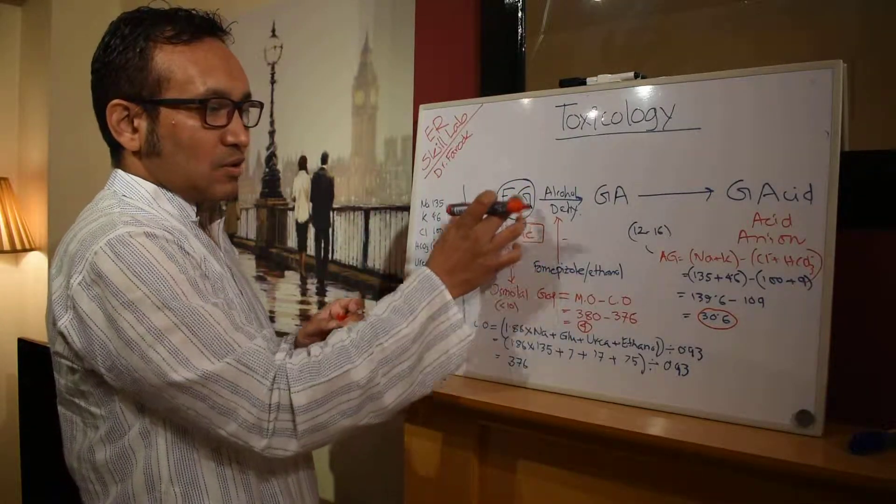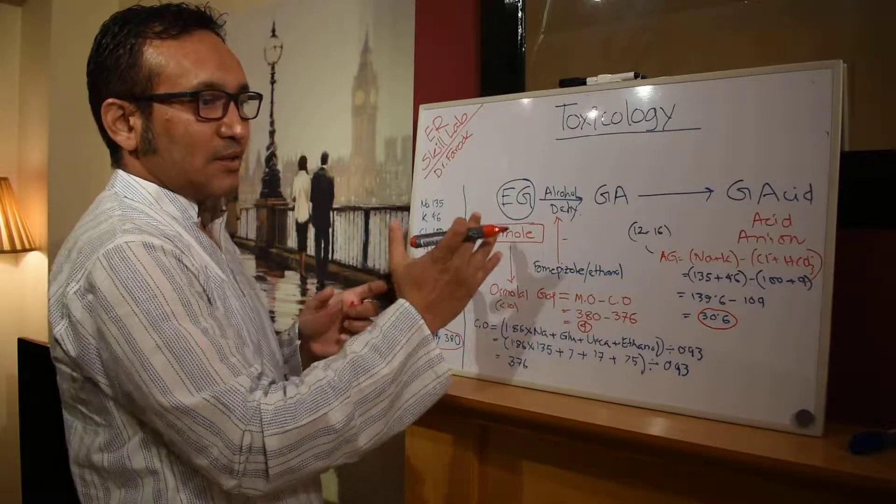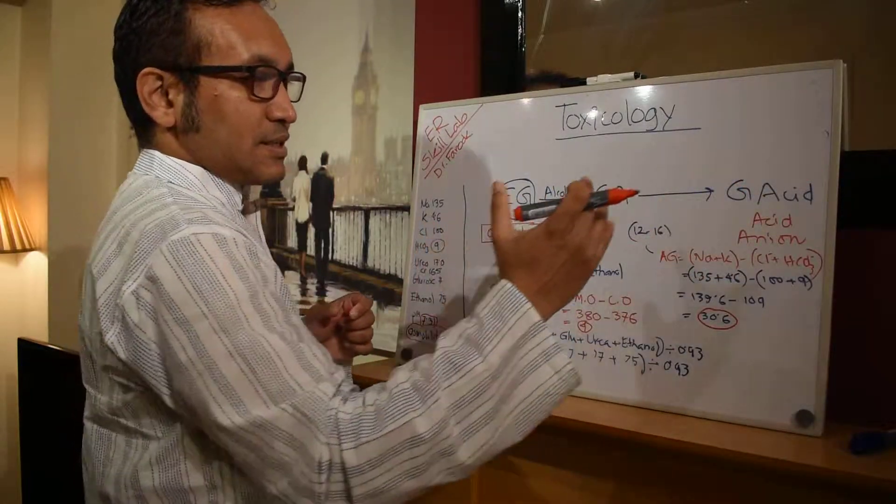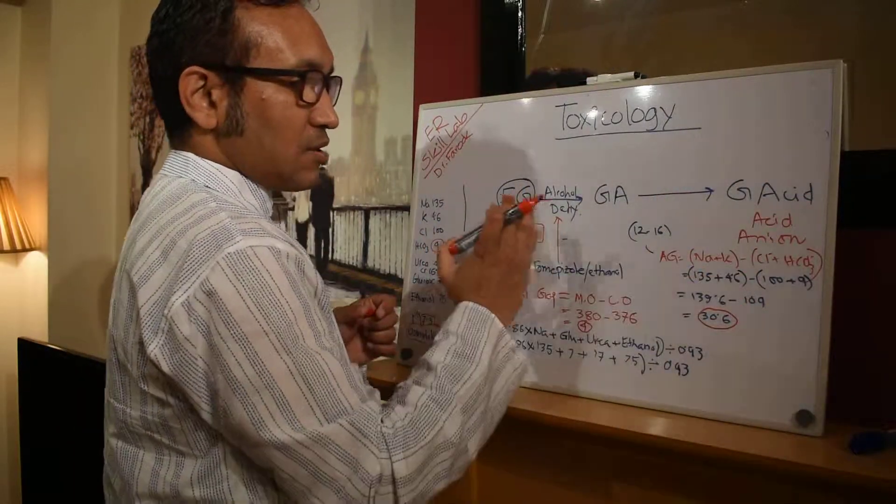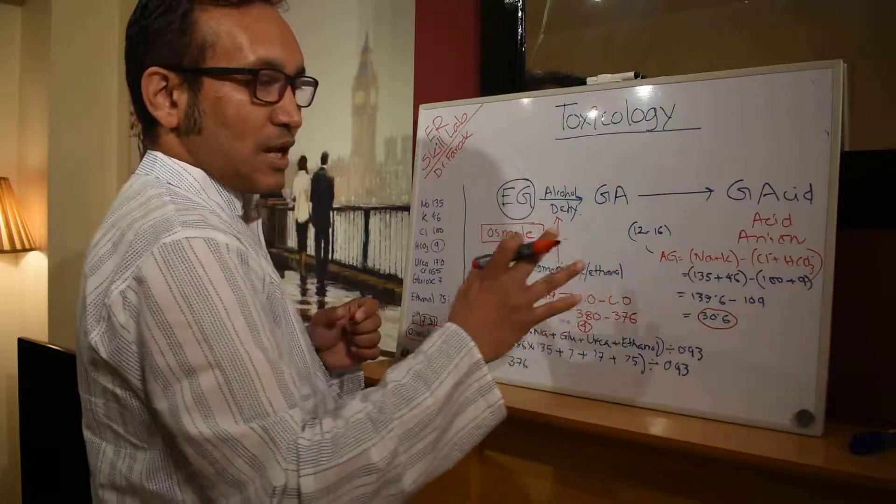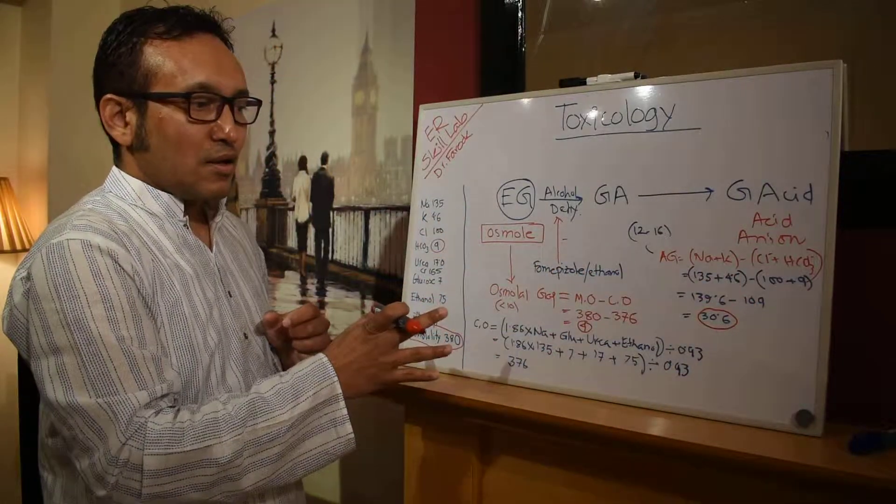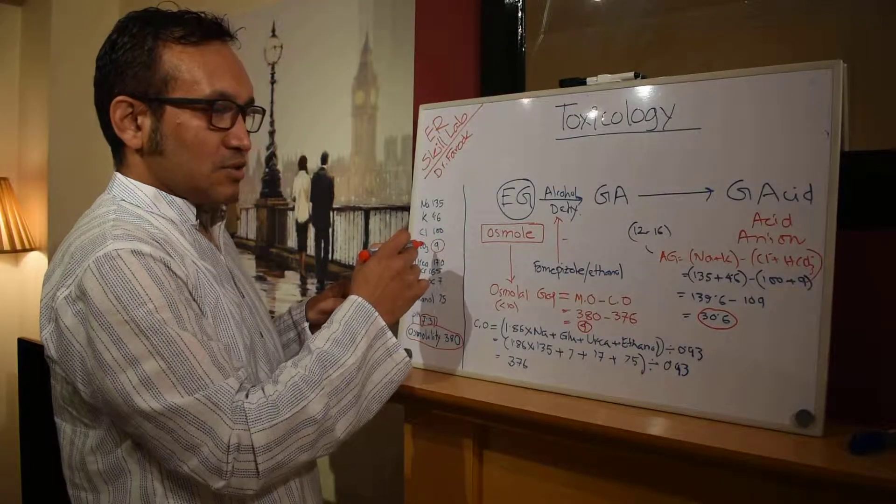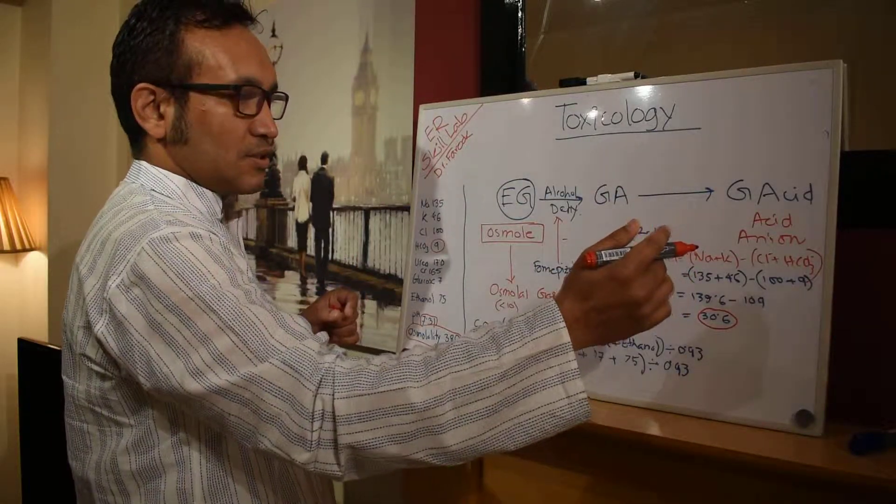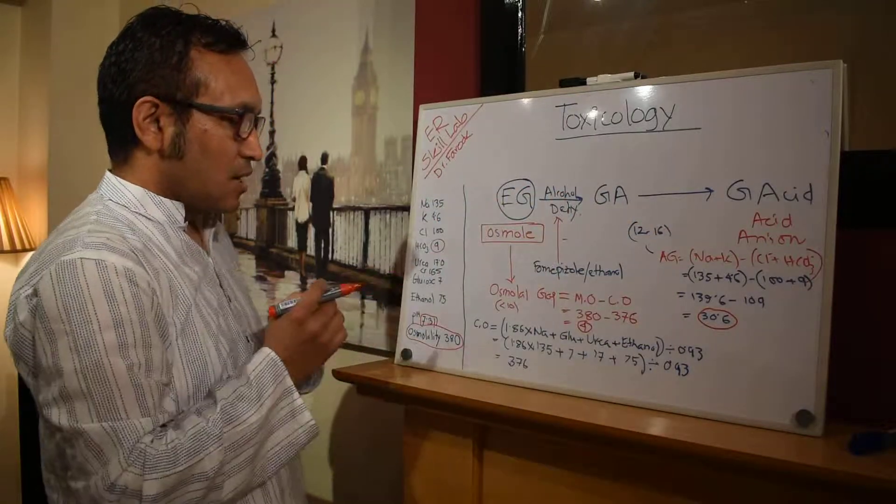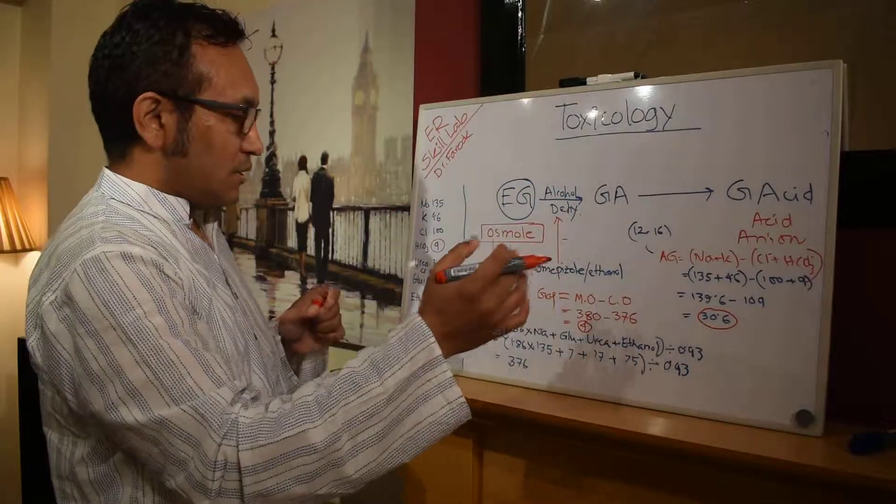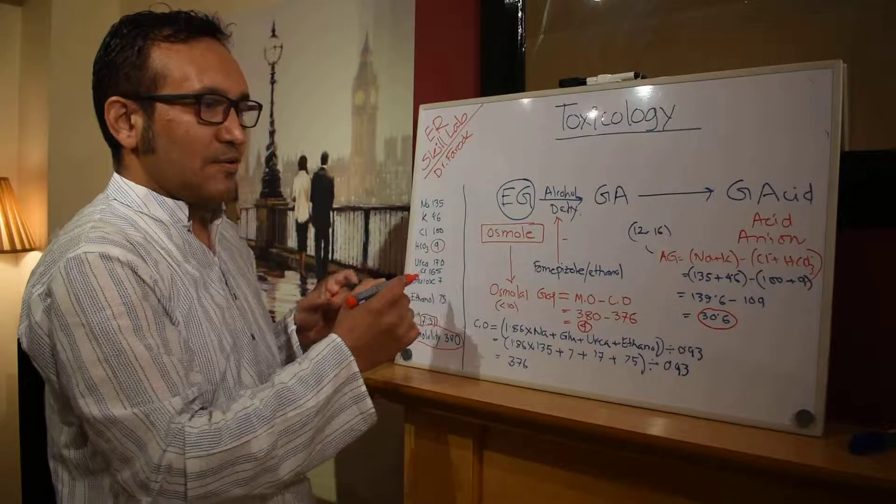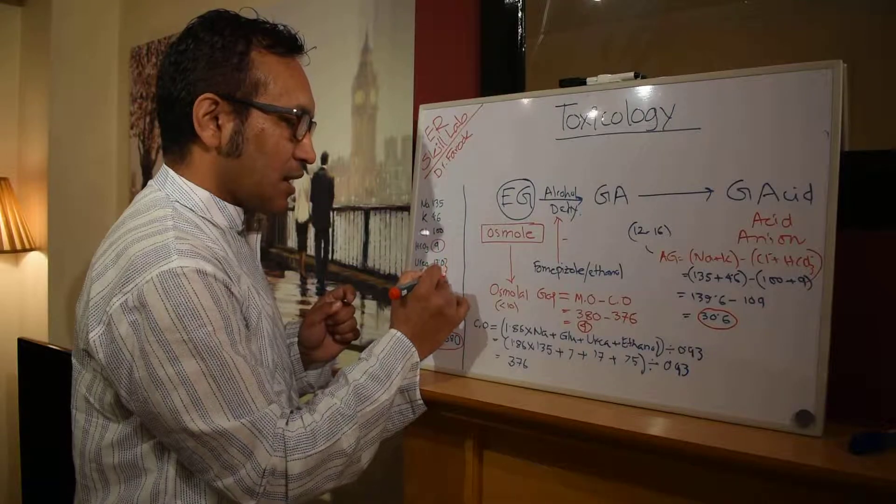This ethylene glycol initially acts as an osmol and then later it becomes an anion, becomes an acid. So it has high anion gap, so it's definitely converted into acid by the time we calculated his values which we confirm with metabolic acidosis, high anion gap metabolic acidosis. And also you can see there is urea 17, creatinine 165, so he is probably having AKI.